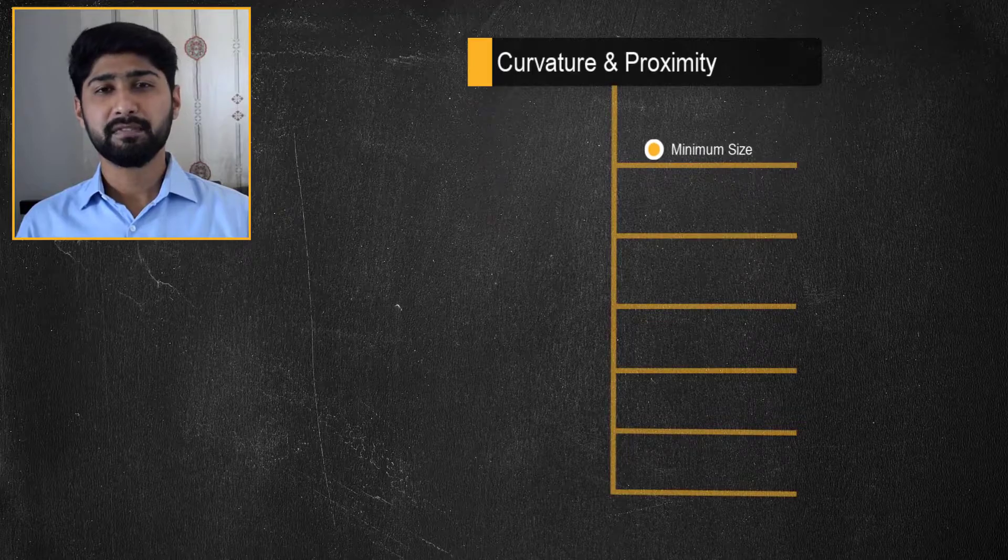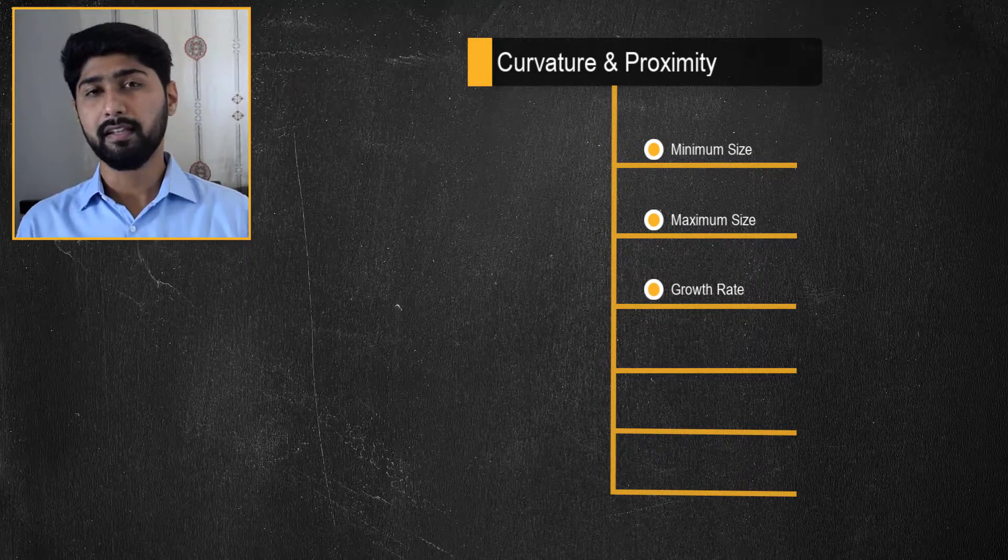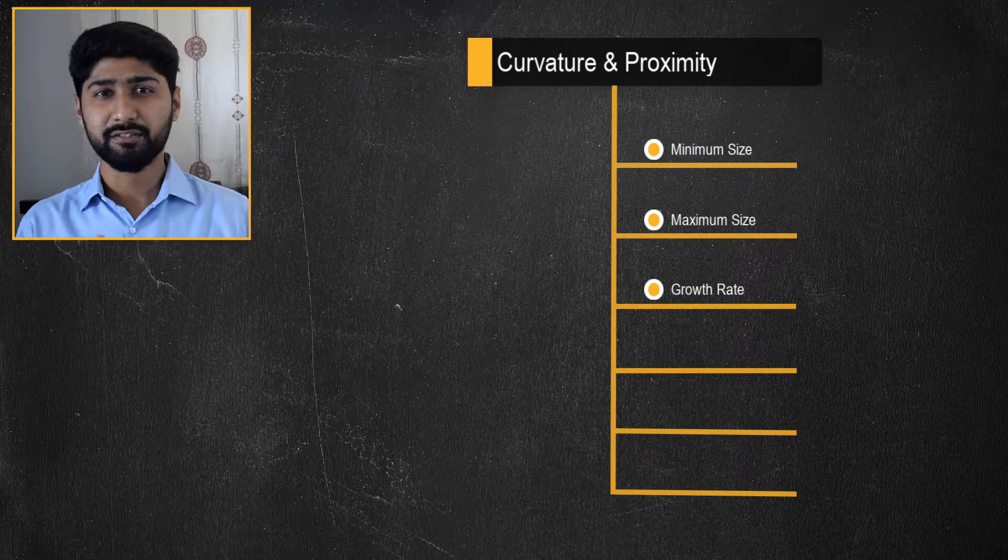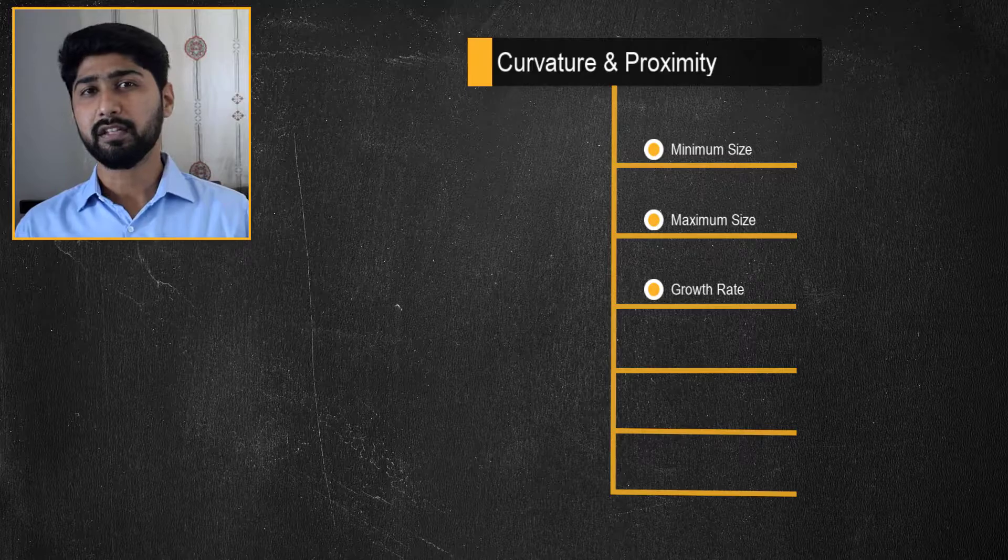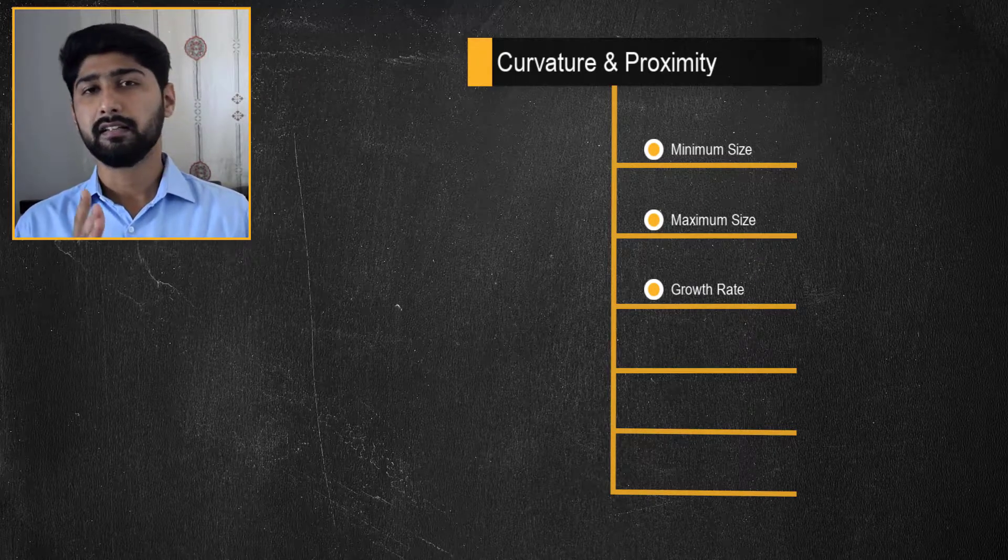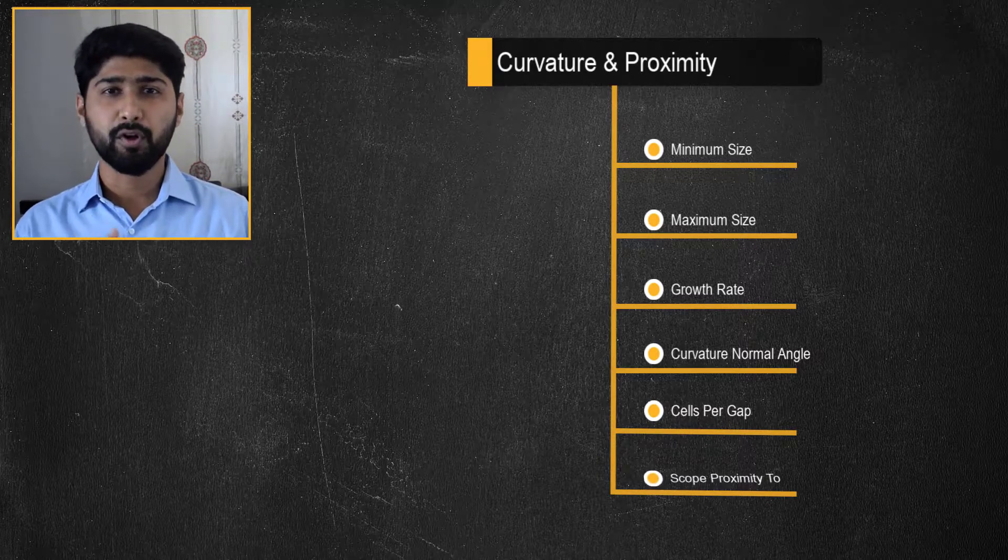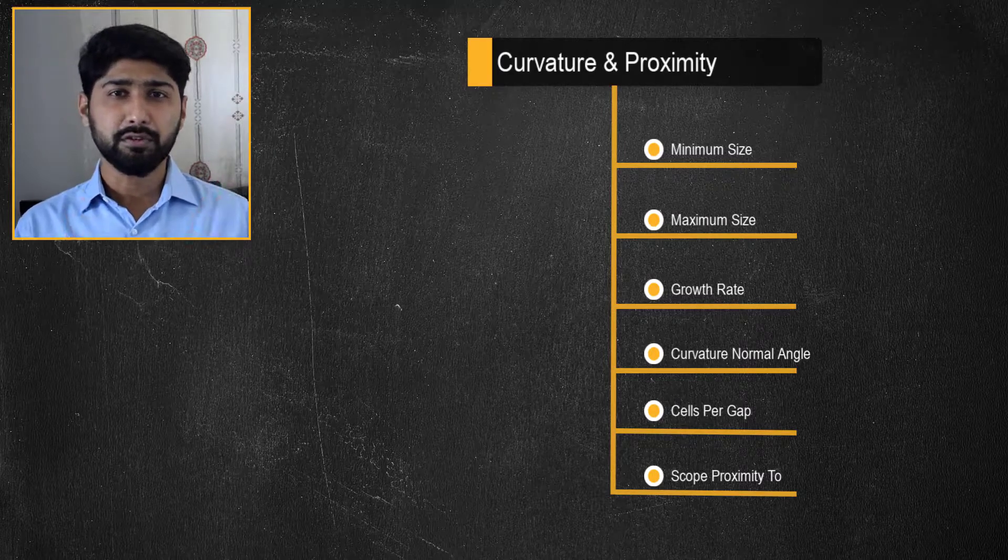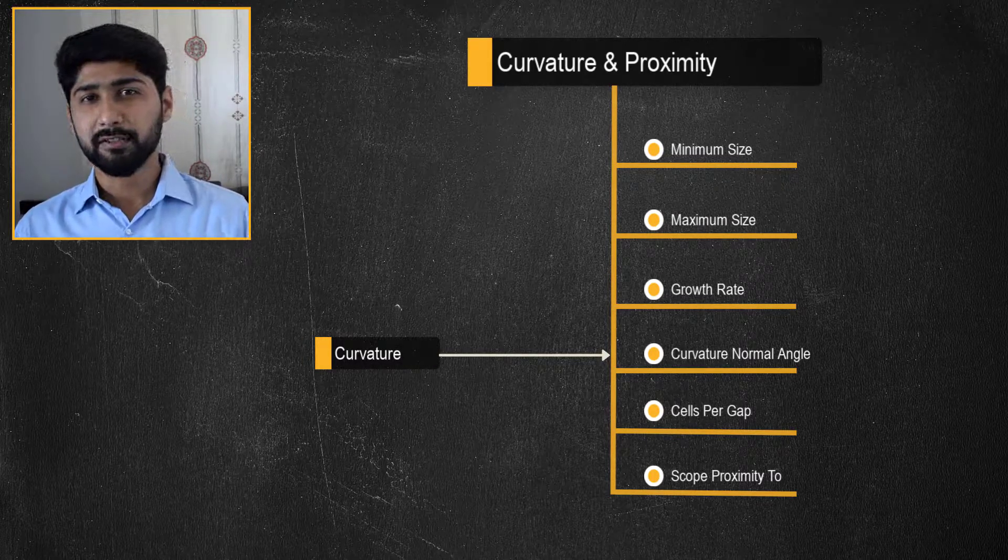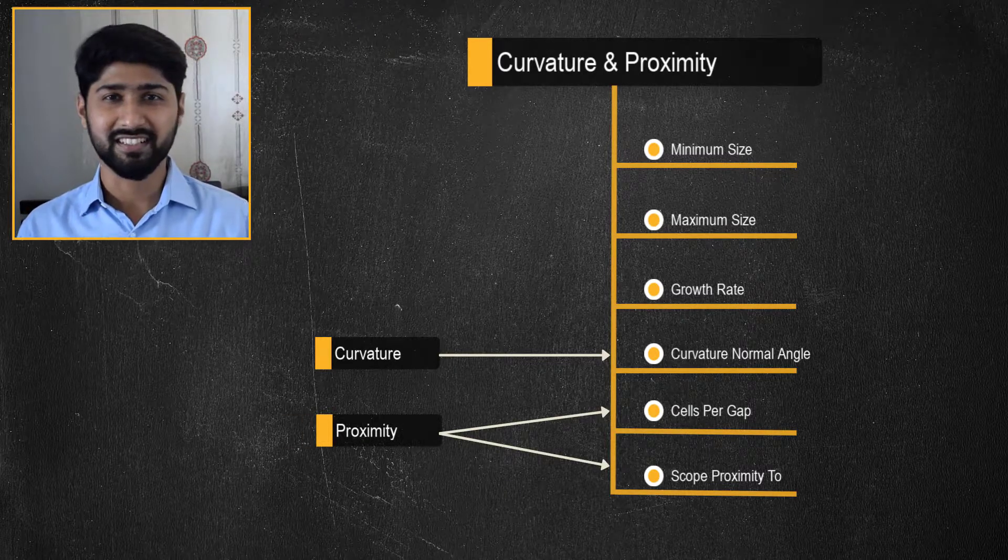In addition to the minimum size, maximum size, and growth rate inputs, when the curvature and proximity size function option is selected there are three more inputs that are required from the user. That is the curvature normal angle, cells per gap, and scope proximity to. The curvature normal angle is associated with the curvature size function and the other two inputs are associated with the proximity size function.